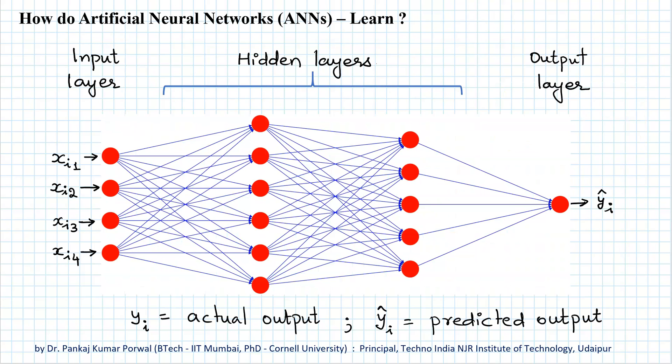In the same way, an artificial neural network learns under supervision of the actual or expected output for a given input. So the learning approach of artificial neural networks is called supervised learning.